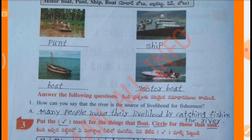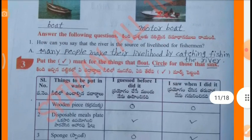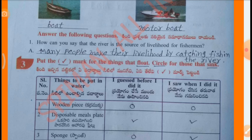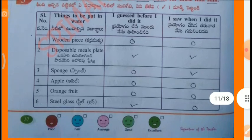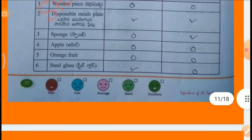Answer the following questions. How can you say that the river is a source of livelihood for fishermen? Many people make their livelihood by catching fish in the river. Put the tick mark for the things that float and circle the things that sink. By this way, we can put tick mark and circle mark for the objects.